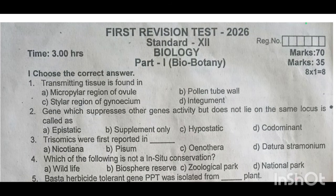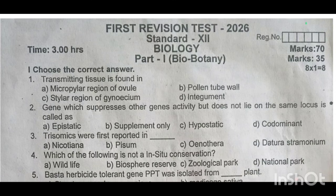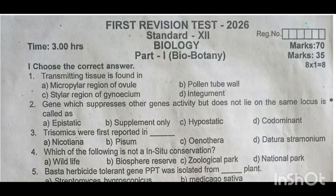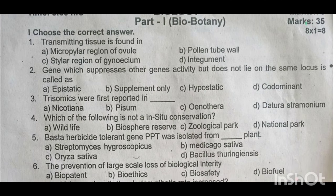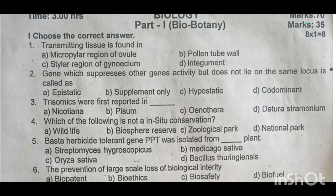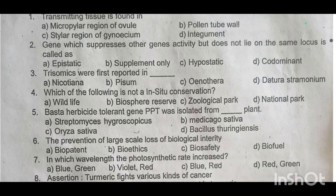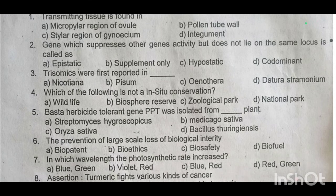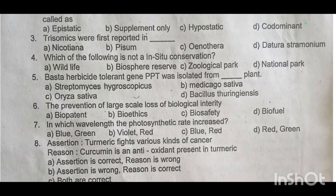First, biology — going to bio-botany. One mark questions: First one, transmitting tissue is found in dash. Second one, the gene which suppresses other gene's activity but does not lie on the same locus is called dash. Third one, trisomics were first reported in dash. Fourth one, which of the following is not in-situ conservation? Fifth one, the best herbicide tolerant gene PPT was isolated from dash plant. Sixth one, the prevention of large-scale loss of biological integrity is dash. Seventh one, in which wavelength does the photosynthetic rate increase? Eighth one, reason — accession — turmeric fights various kinds of cancer.